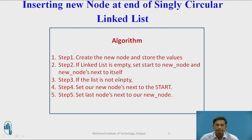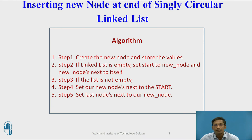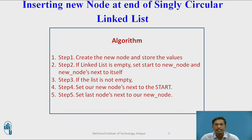Step 3: If the linked list is not empty, meaning some nodes are already present, traverse from first to last node and set the new node's next part to start, and set the last node's next to the new node. You cannot point directly to the last node because there is only one global pointer called start. You must traverse using a temporary variable, since singly circular linked lists have no previous pointers. Once temp points to the last node, connect temp's next to the new node and the new node's next to start.